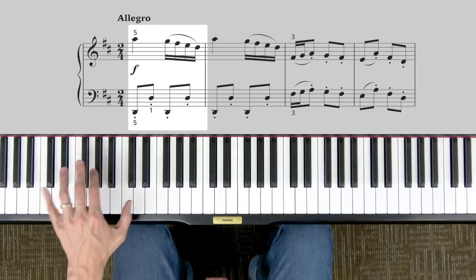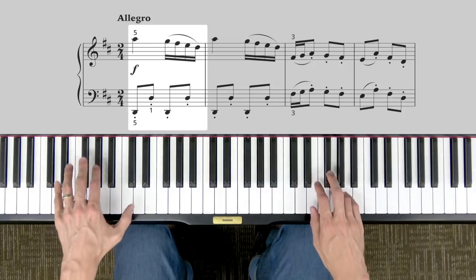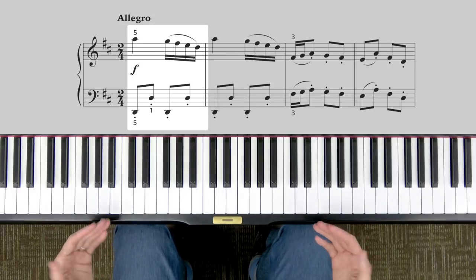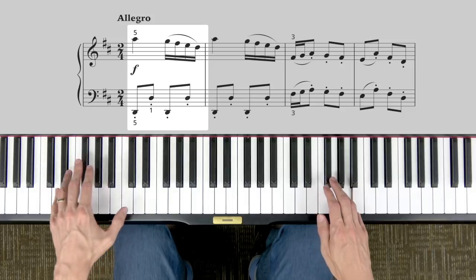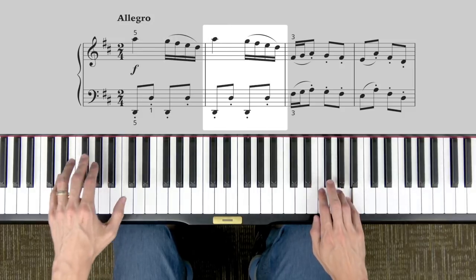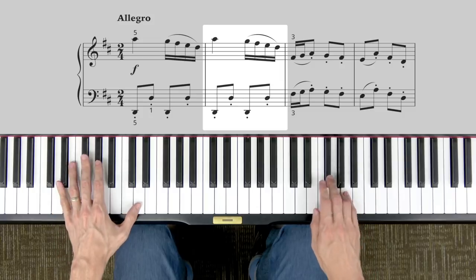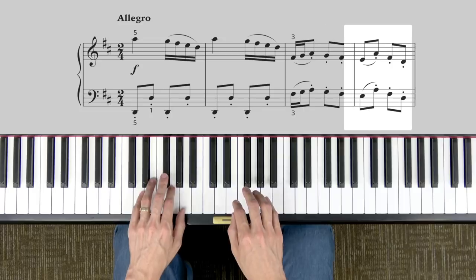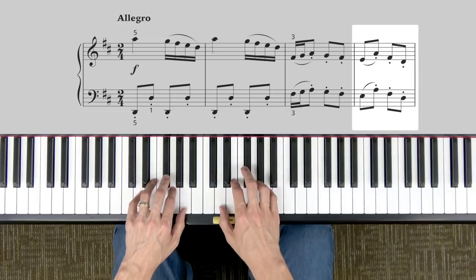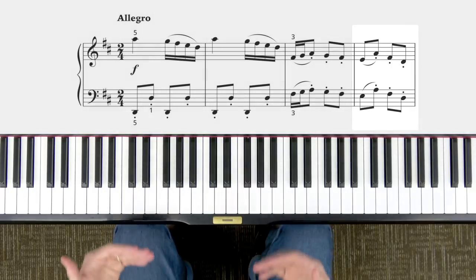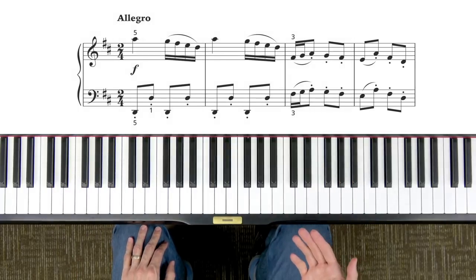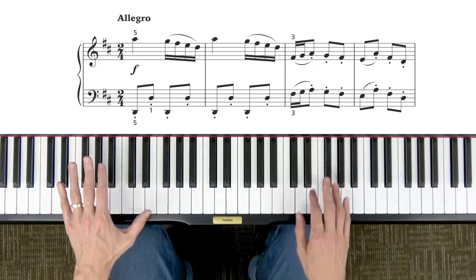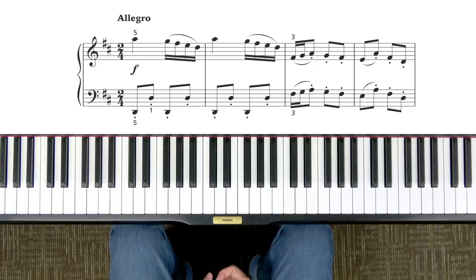Also note how the right hand should be legato, while the left hand is staccato. At first it won't feel easy to do, so go very slowly. Then both hands teleport towards the middle of the piano for this part. If you would like to try some hands together you can pause to do that, but again most of you will probably want to just do hands alone at first and tackle the hands together after a couple of days.